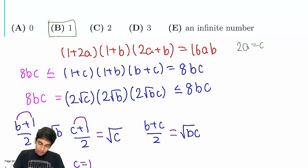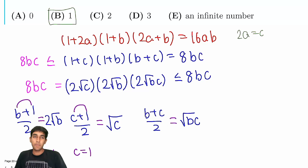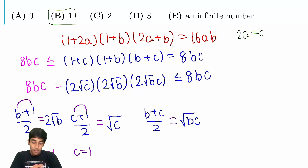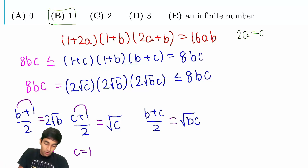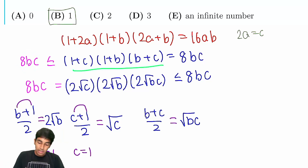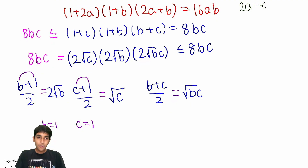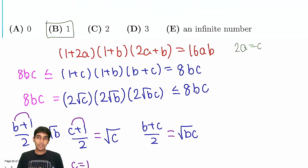A brilliant problem! The key trick was — the substitution 2a = c was just a preference to get symmetric expressions. The real key was noticing the degree imbalance: degree 3 on the left, degree 2 on the right. So we looked for a lower bound on the left side using AM-GM on the sums, which gave us 8bc. That bound was so tight there was only one possibility. Thanks for watching!